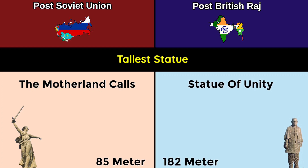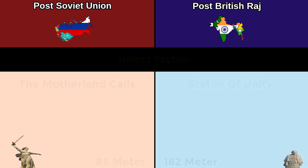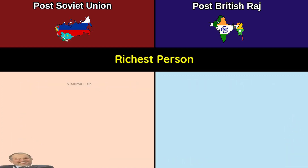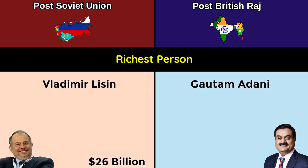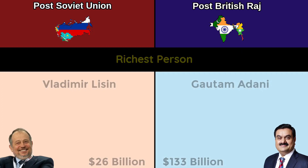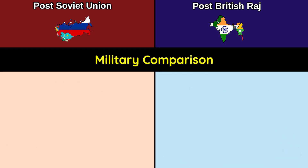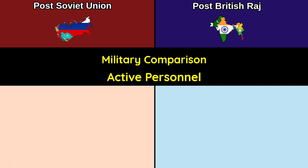Tallest statue: The Motherland Calls at 85 meters versus Statue of Unity at 182 meters. Richest person: Vladimir Lisin at $26 billion versus Gautam Adani at $133 billion.